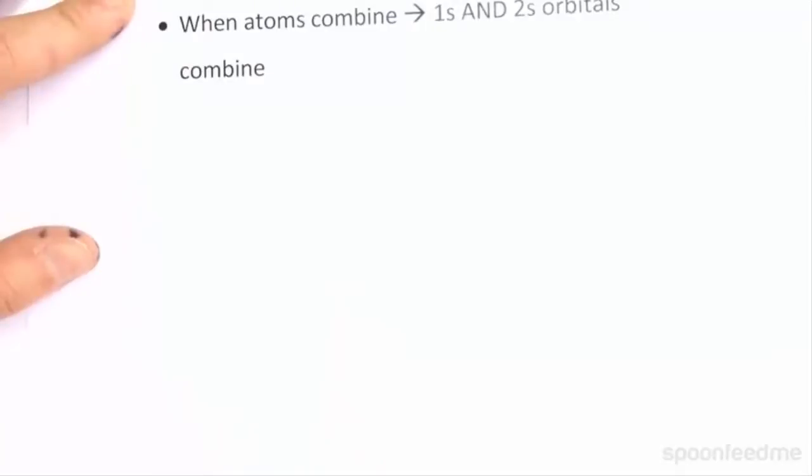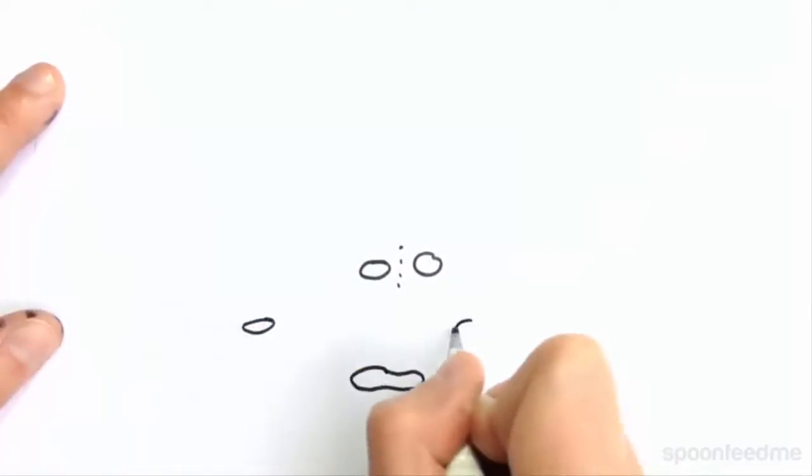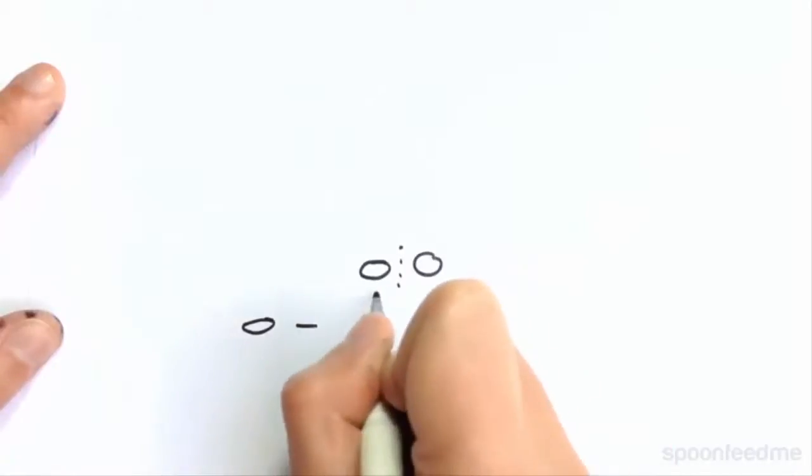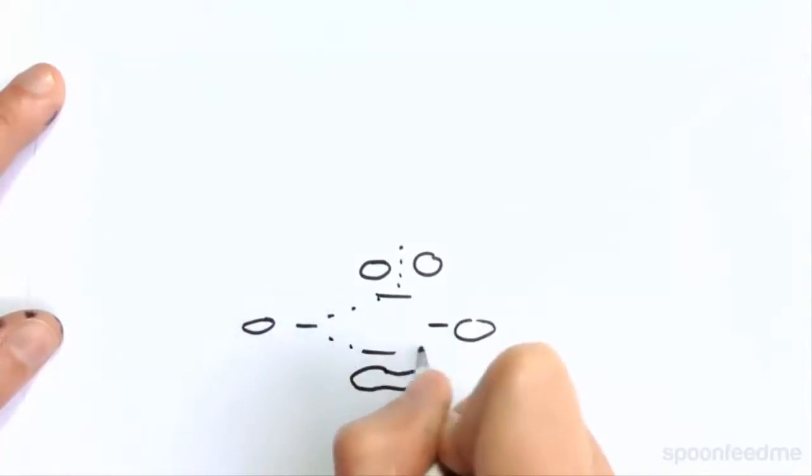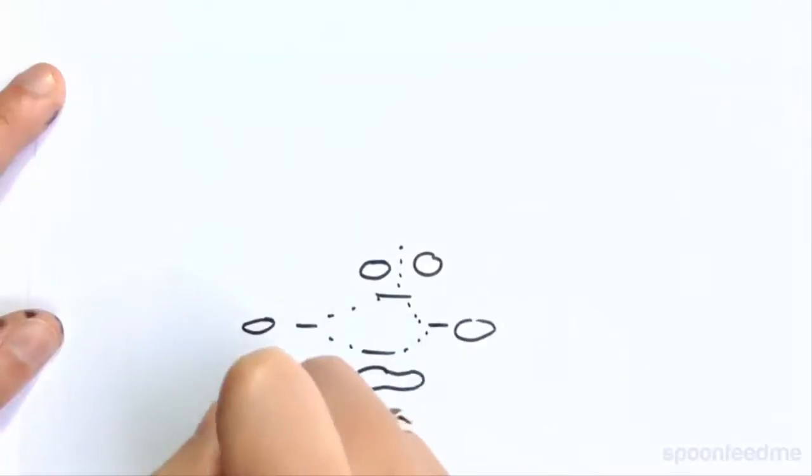So we have our 1s orbitals combining down here. I won't bother drawing out the ones to either side, but I will draw out... I'll have this here. These are our 1s orbitals.